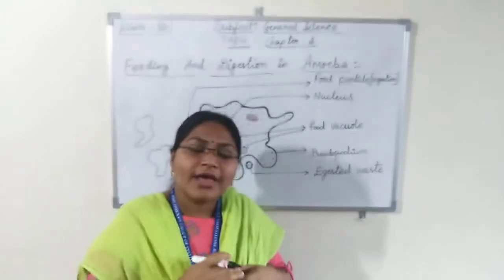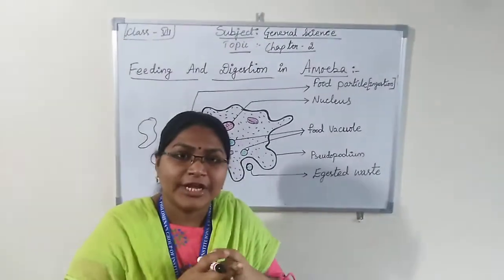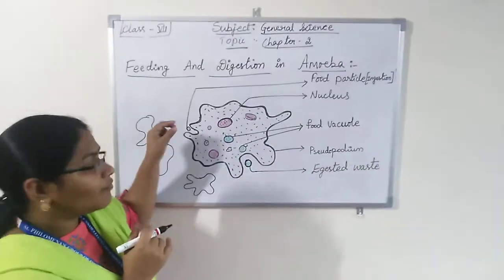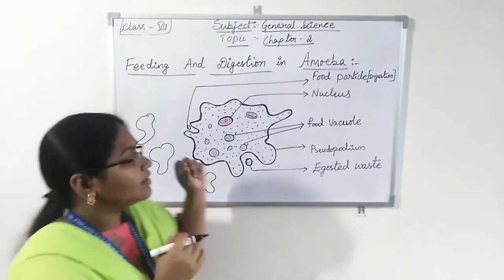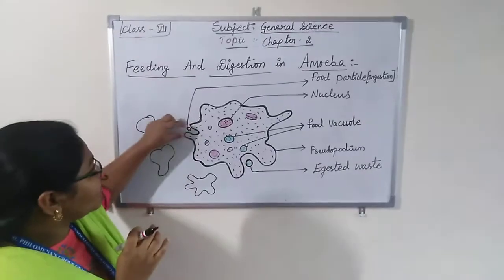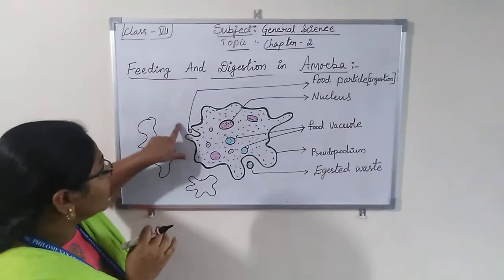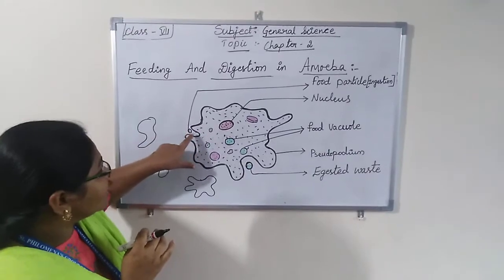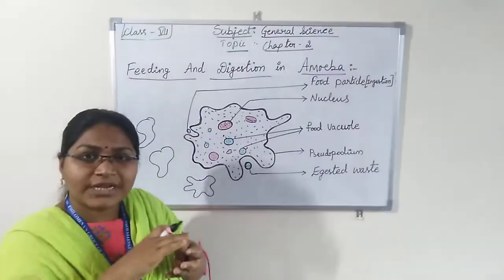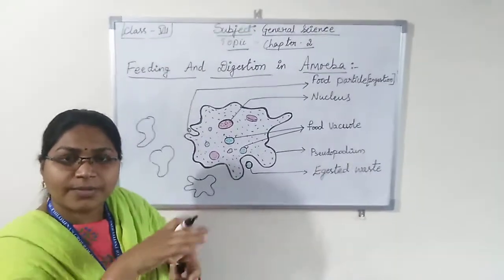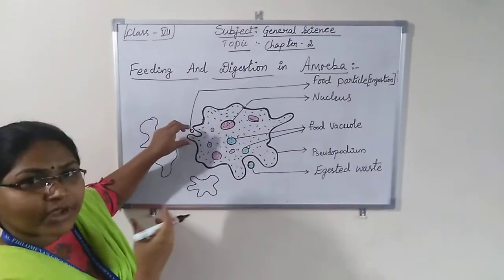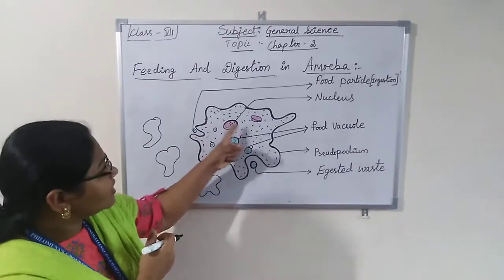Amoeba feeds on other microorganisms. When it senses the food — food taking we call ingestion — it immediately opens out. The pseudopodium approaches the food item, surrounds it, and covers it completely — this is called engulfing. The food item is immediately captured inside the food vacuole.